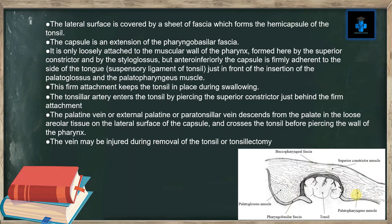The tonsillar artery enters the tonsil by piercing the superior constrictor just behind the firm attachment. The palatine vein — also known as the external palatine or paratonsillar vein — descends from the palate in the loose areolar tissue on the lateral surface of the capsule and crosses the tonsil before piercing the wall of the pharynx. This vein may be injured during removal of the tonsil, the process known as tonsillectomy.